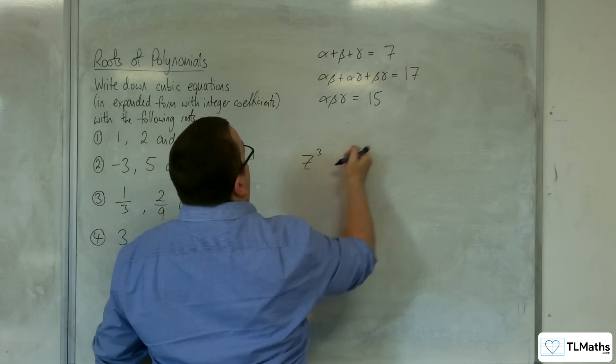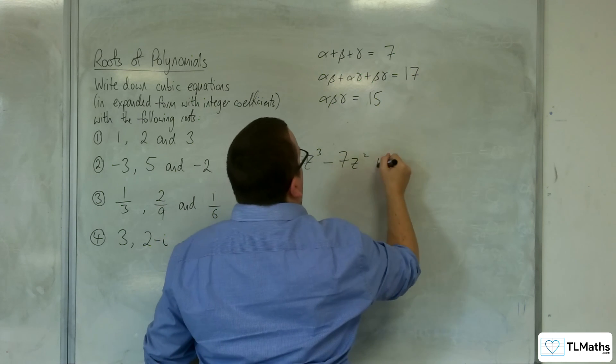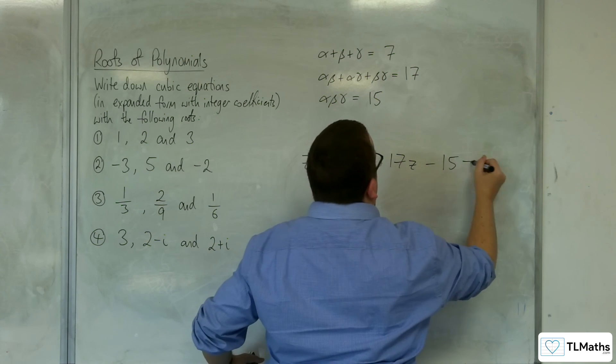So, we'll have z cubed, take away 7z squared, plus 17z, take away 15, equals 0.